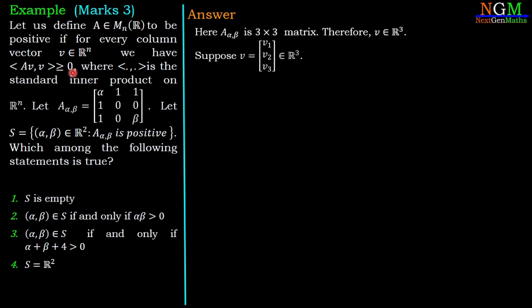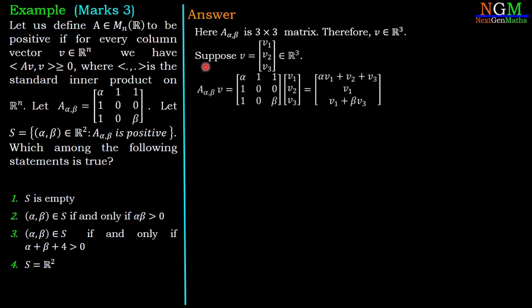To check this condition, we first need to compute A(α,β)·v. Performing the matrix multiplication, we get the result: (αv₁ + v₂ + v₃, v₁, v₁ + βv₃).